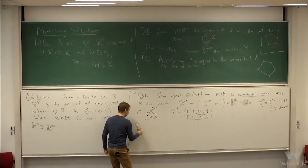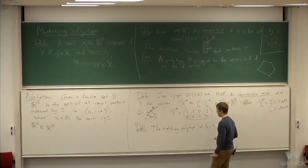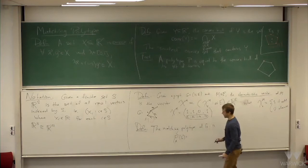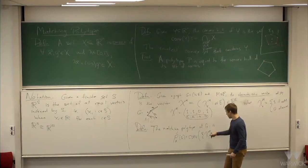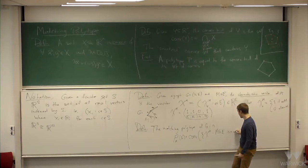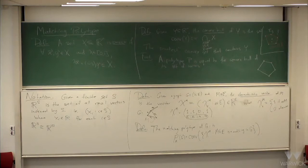The matching polytope of G — denoted P_m(G) — is the convex hull of all the characteristic vectors of matchings. So it's the convex hull of {chi^m : m is a matching in G}. If you go through all your matchings one by one, each gives you a point in R to the E, and taking the convex hull of all those points gives you the matching polytope.